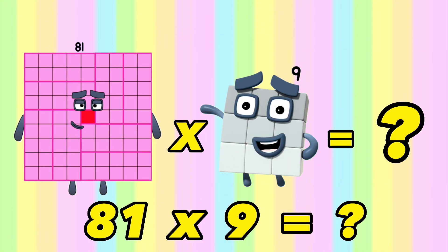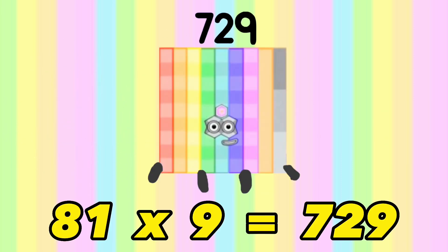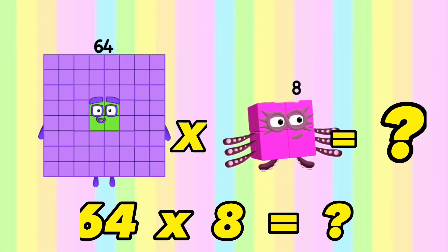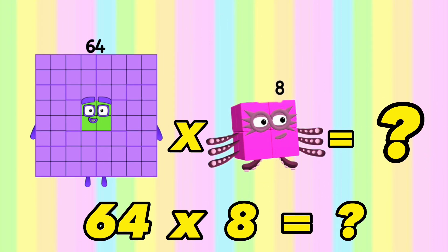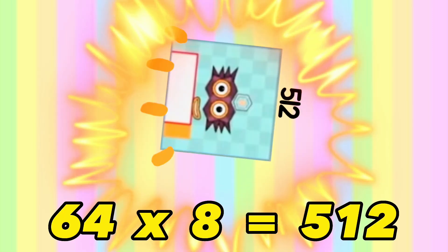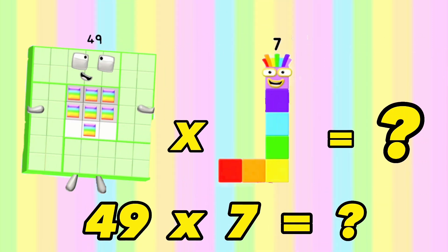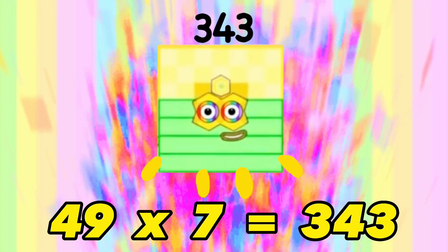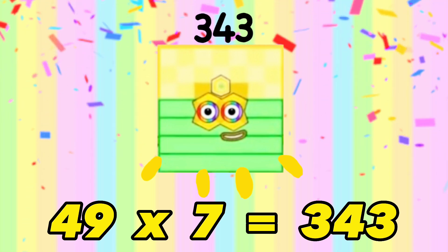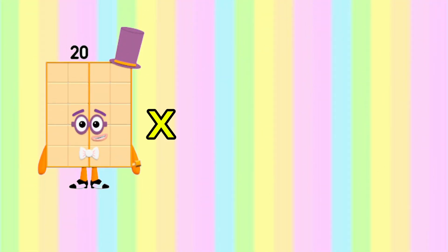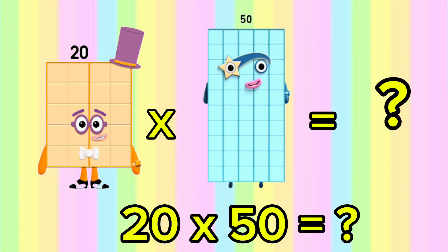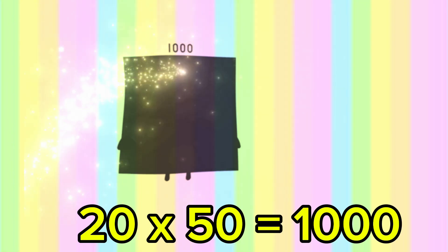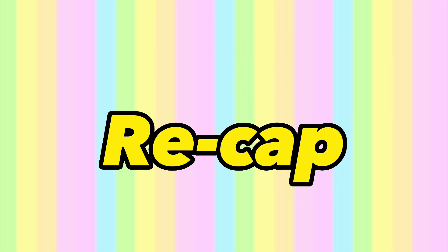81 times 9 is equals to 729. 64 times 8 is equals to 512. 49 times 7 is equals to 343. 20 times 50 is equals to 1,000. Let's do a recap.